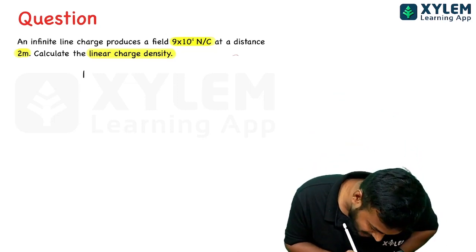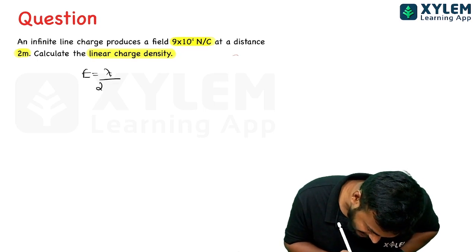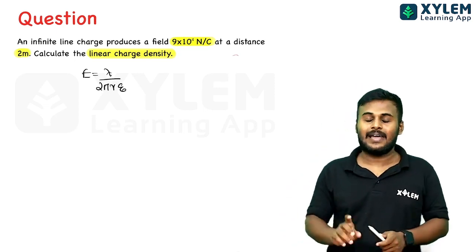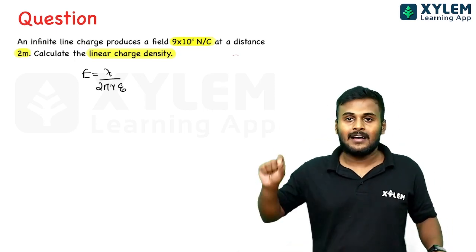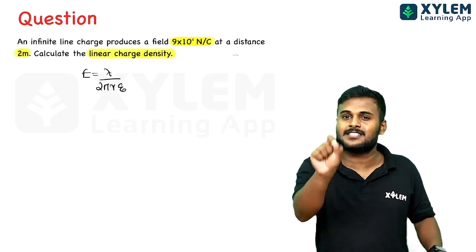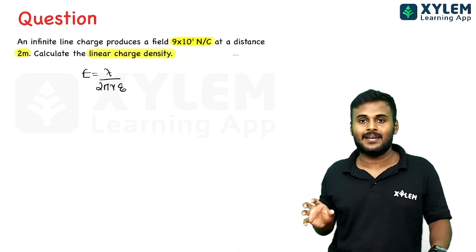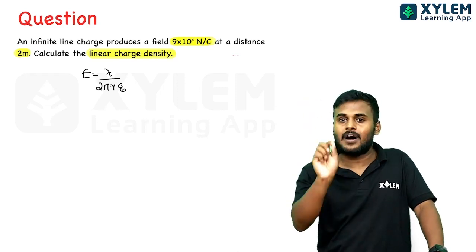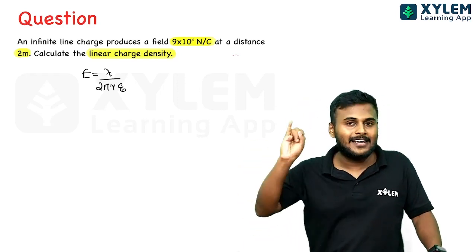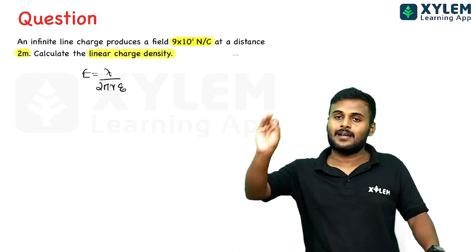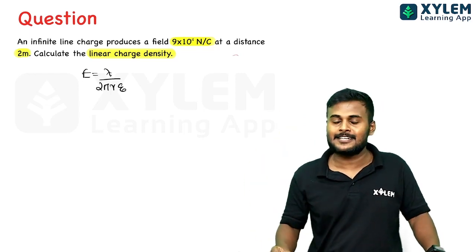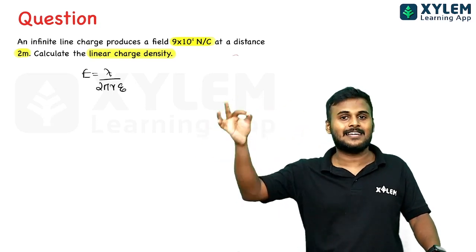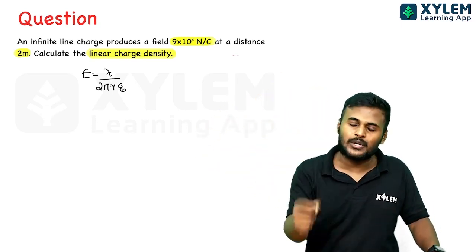The equation is E = λ / 2πrε₀. Rearranging, λ = E × 2πrε₀. We can also write this as λ = E / (2π ε₀ × r) in the appropriate form. Lambda is linear charge density and r is the distance from the wire.